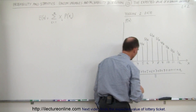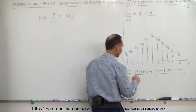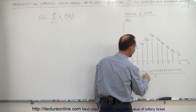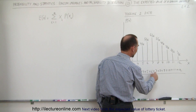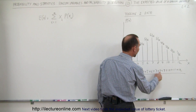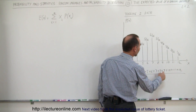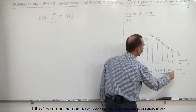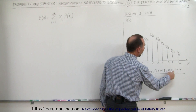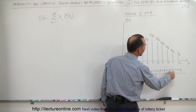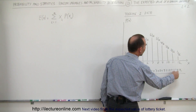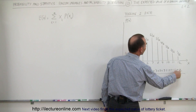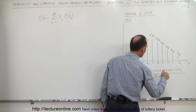We have 11 numbers. So what would this be? This would be 5, 9, 14, 20, 27, 35, 44, 54, 65, 67, 77.